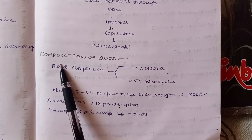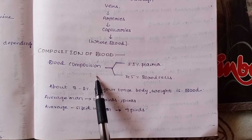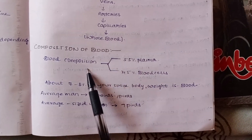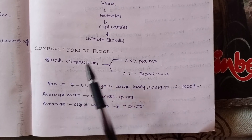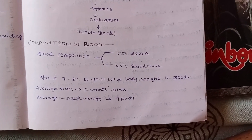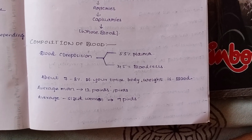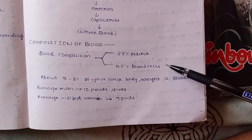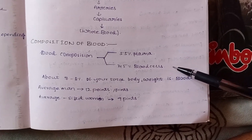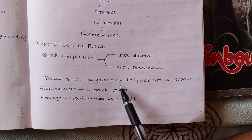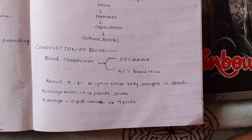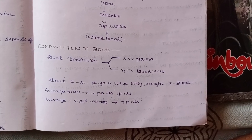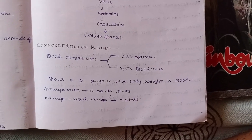The composition of blood is mainly categorized into two types: plasma and blood cells. Plasma makes up 55% of blood, and the remaining 45% is blood cells. Blood cells include RBC, WBC, and platelets. About 7 to 8% of your total body weight is blood — for someone around 60 kg, that is approximately 7 to 8% blood by weight.